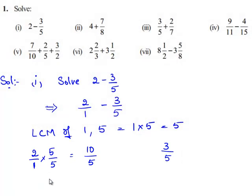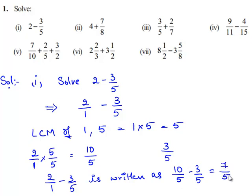So 2 by 1 minus 3 by 5 is written as 10 by 5 minus 3 by 5, which equals 10 minus 3, that is 7, divided by 5.